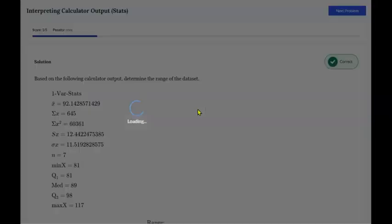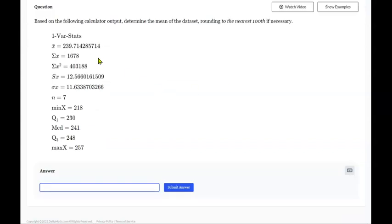Let's see what the next question will be. The next question is, determine the mean of the data set. And remember that the mean is the X bar value. So that's this one here at the top. And it's to the nearest hundredth. So that's the place value we want to look at. So it looks like it's going to be 239.71. Because the number after the number one is not large enough to round us up.